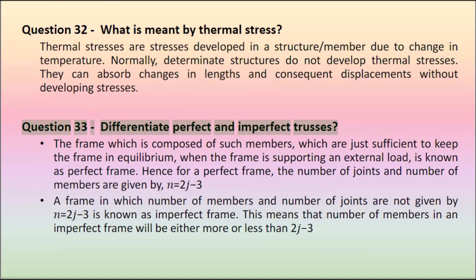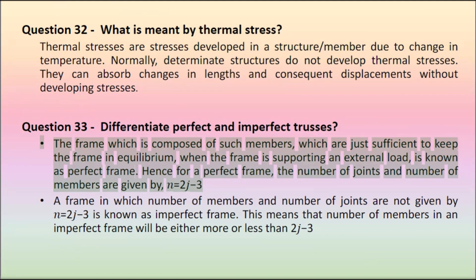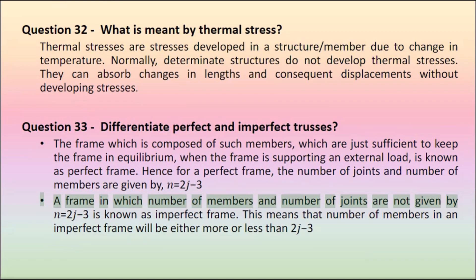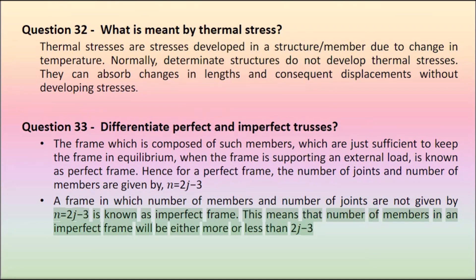Question 33: Differentiate perfect and imperfect trusses. A frame which is composed of members that are just sufficient to keep the frame in equilibrium when supporting an external load is known as a perfect frame. For a perfect frame, the number of members m and joints j satisfy m equals 2j minus 3. A frame in which the number of members and joints are not given by m equals 2j minus 3 is known as an imperfect frame — the number of members will be either more or less than 2j minus 3.